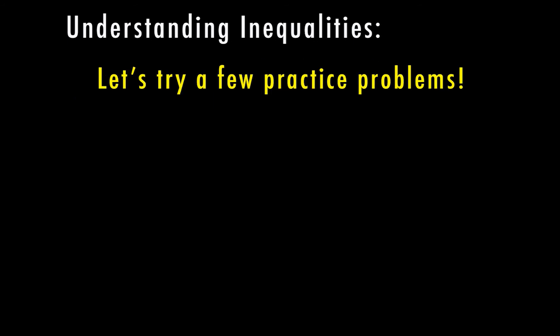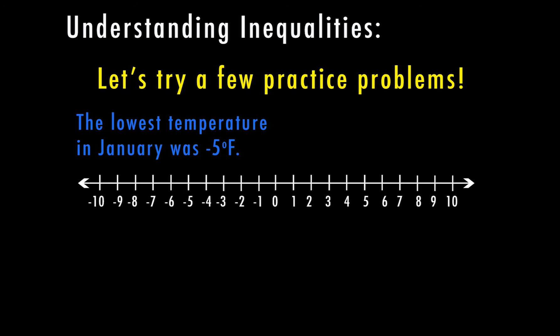Now let's try a practice problem with a real world situation: the lowest temperature in January was negative five. I'll use T for temperature. Since negative five was the lowest temperature, T has to be greater than or equal to negative five — that's why it can equal negative five. For the graph, we draw a closed circle on negative five and shade everything greater than, meaning the temperature in January could be any number negative five or greater.